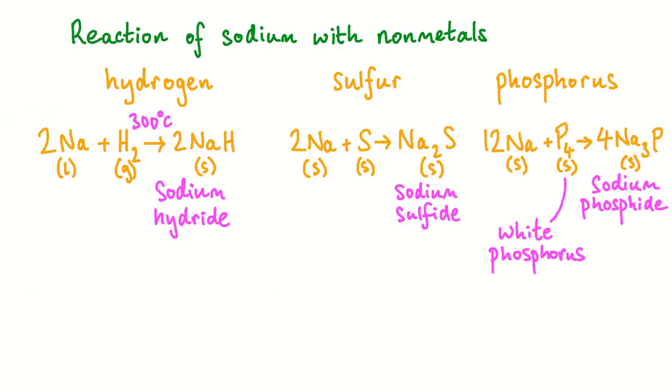Sodium phosphide can be formed by heating white phosphorus with sodium metal. Unusually for a group 1 metal compound, sodium phosphide is a black solid.